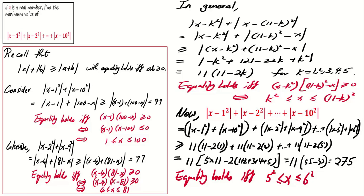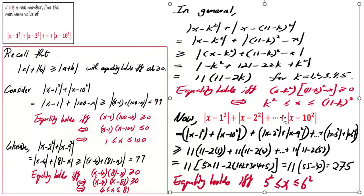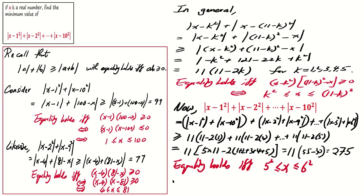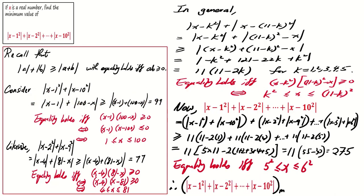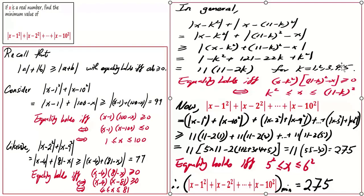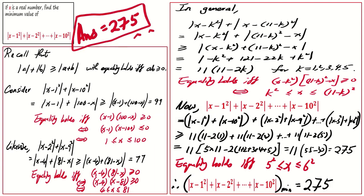To satisfy all equality conditions simultaneously, we choose k equals 5, meaning x is in between 5² and 6², that is between 25 and 36. With this, we conclude that the minimum of this expression is 275. Therefore, 275 is the answer for this question. That's all for today's lesson — see you next time, bye-bye.